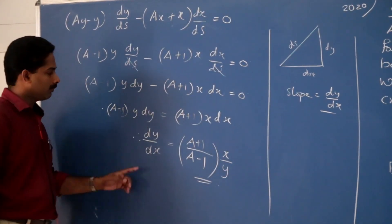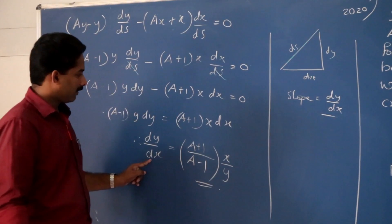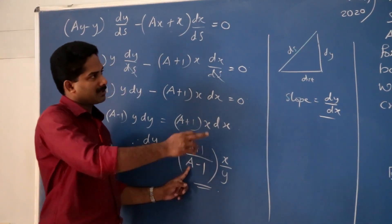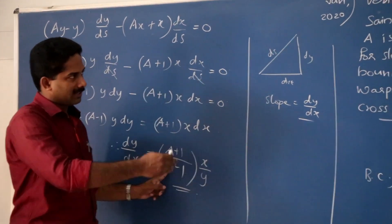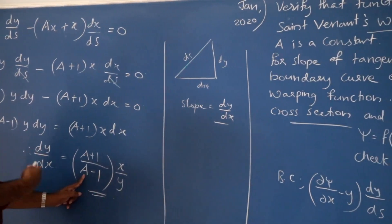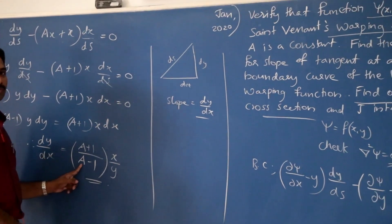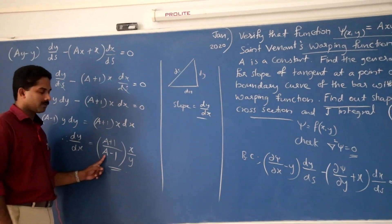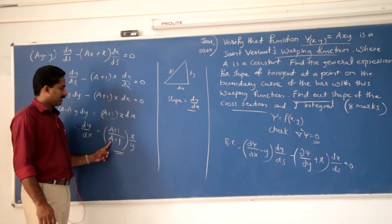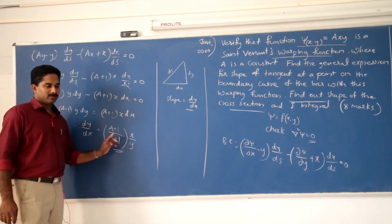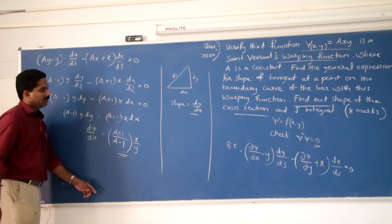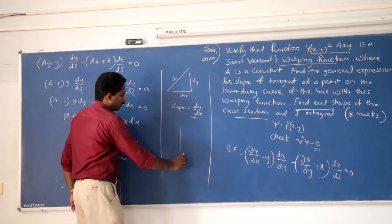So this is the equation for slope on that bar. It is given in the problem that ψ = a·xy. The value of a = (b²−a²)/(b²+a²), where a and b are the semi-major and semi-minor axes, and x, y are variables. So the slope is a function of x and y at any point on the elliptical boundary.